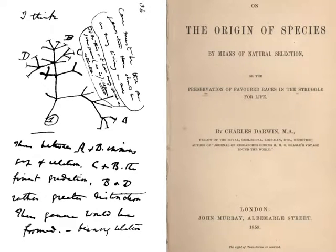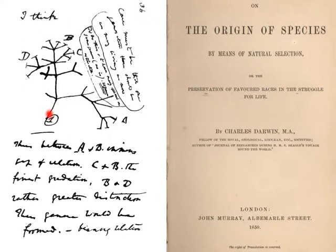When he got back from his voyage on the HMS Beagle, he jotted some things down. One of the first drawings he made showed how he thought organisms might change over time and how they might have a common ancestor. This is also a copy of the front page of his book, 'On the Origin of Species,' in which he outlines his theory of natural selection. His theory can be summarized in two observations and two inferences.